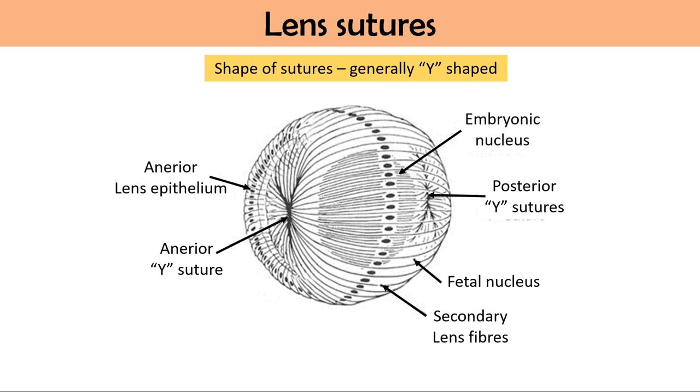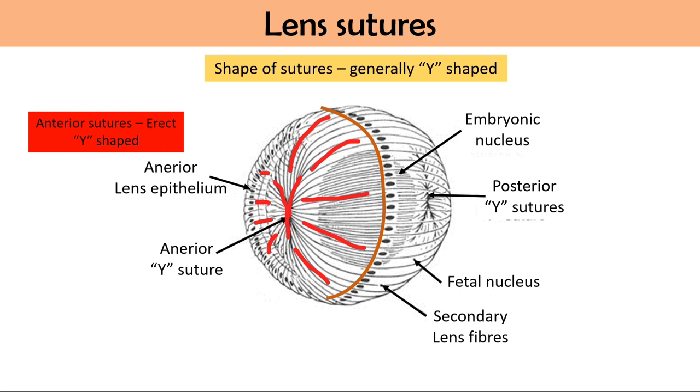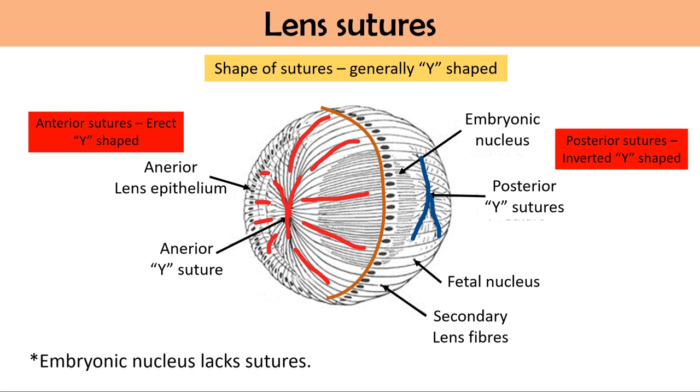As I told you, lens has an equator where the anterior and posterior surface of lens meets. At the equator of lens we saw that epithelial cells actively divide and form new fibers, and those fibers migrate inward in the lens. This is the point where these fibers meet and form a suture. One more important point here is that these sutures are present in each nucleus except embryonic nucleus which lacks sutures. The reason for lacking sutures in embryonic nucleus we will see in embryology of lens.